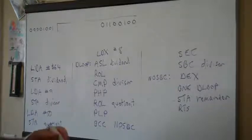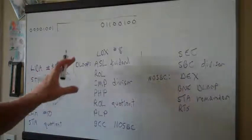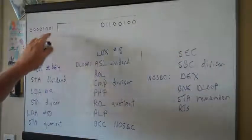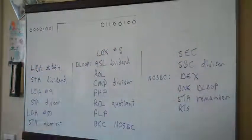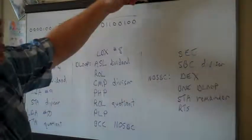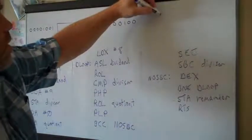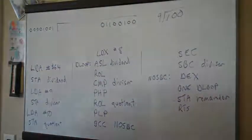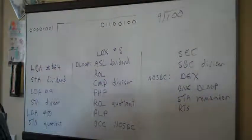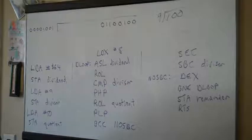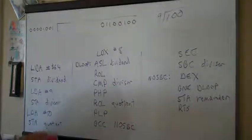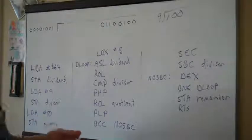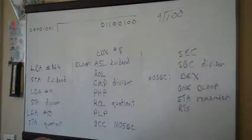This is going to be a routine that will divide any 8-bit number by any other 8-bit number and give you the result. What I'm going to do is divide 100 by 9. The 6502 doesn't have a division operator, so you have to do this with adding and subtracting. Basically what you do is long division, the same way you learned in grade school.